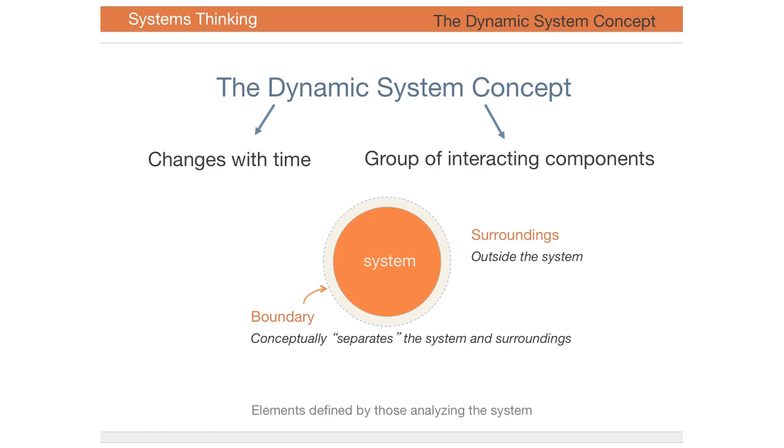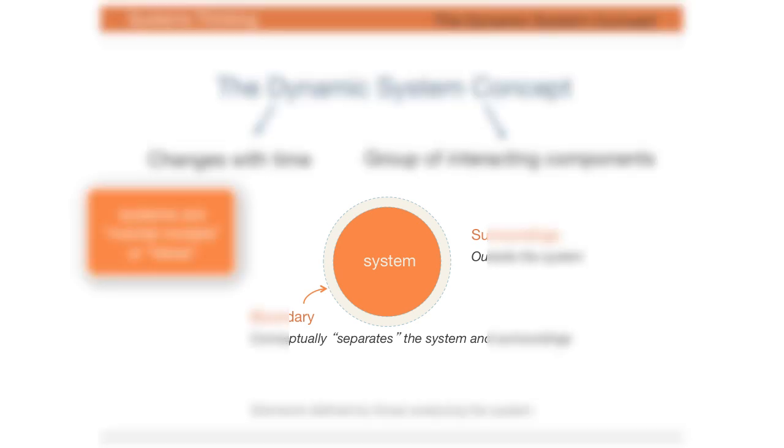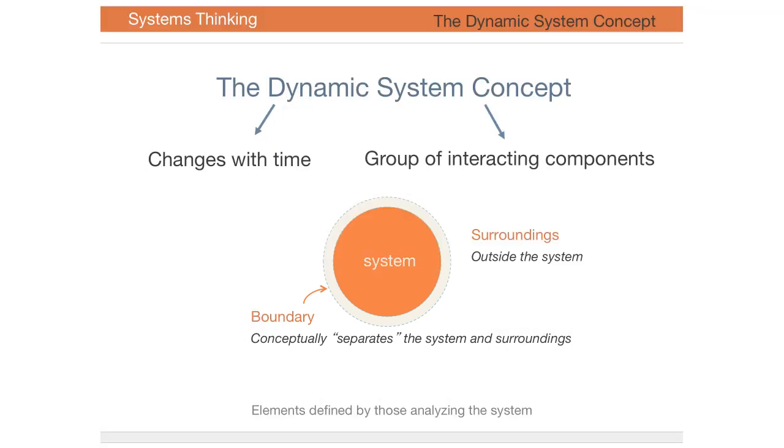Remember that a system is really a concept designed by those who are analyzing the system. It's not something real, it's an idea. Here, the system is represented as a circle with a boundary. The boundary is a concept of the system that we've designed as the analyst.